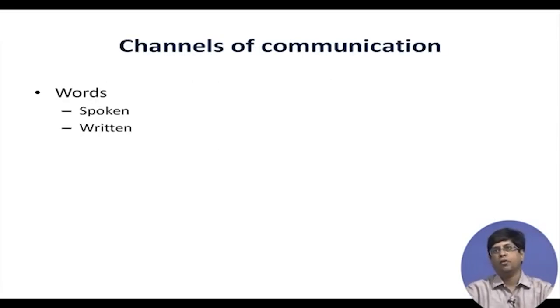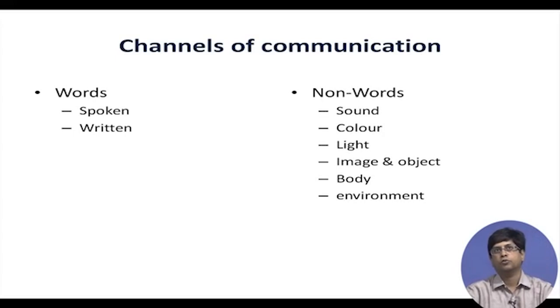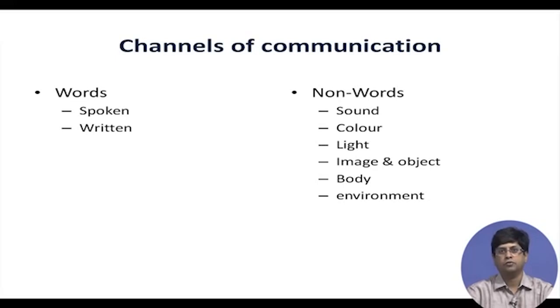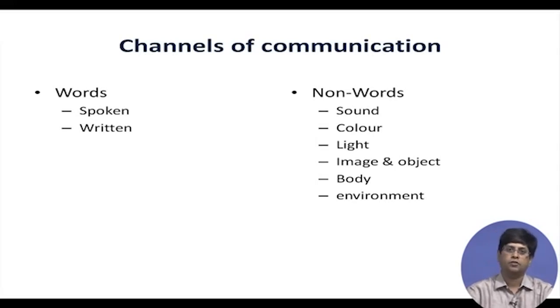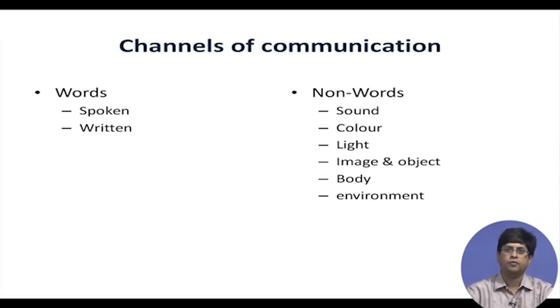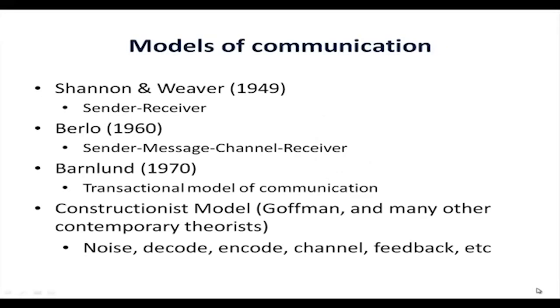We have already talked about channels of communication. Here are some illustrations: words could be spoken or written; non-words could also be channels — like sounds, colors, light, images, and objects; body; environment; even digital signals — for example, a fiber optic line or wireless signal, through which any message can be communicated, is considered a channel. If someone is using sign language for deaf people, that is also a channel of communication. A painting becomes a channel of communication. All these can be defined as channels of communication.